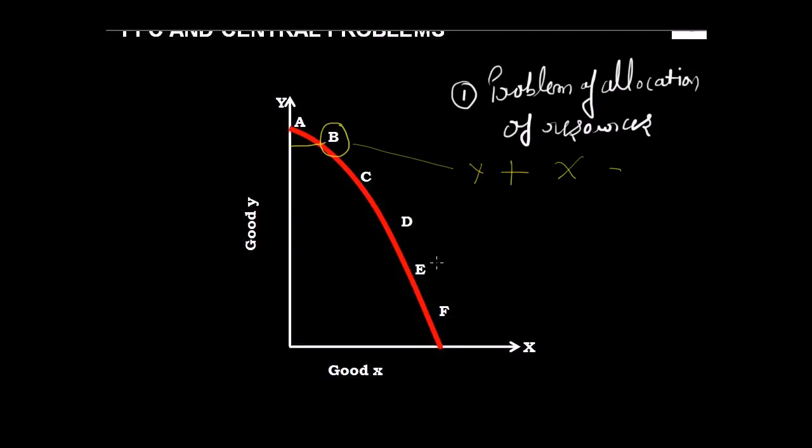Similarly, if I take point E, then at point E you would find more of good X being made and less of good Y. This is how the problem of allocation of resources is, if not solved, then at least shown with the help of PPC.